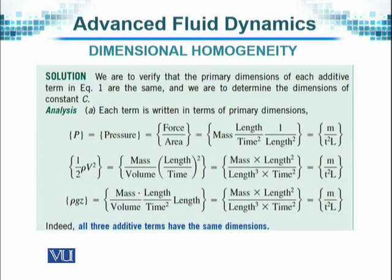Now let us see the first term, which is pressure. Pressure is equal to force per unit area, and force is mass times length per time squared. Since pressure is force per unit area, and area is length squared — either it is length times breadth, or length times length — so it will be length squared as far as dimensions are concerned. When we simplify all of them, the dimensions of the term reduce to M over T squared times L.